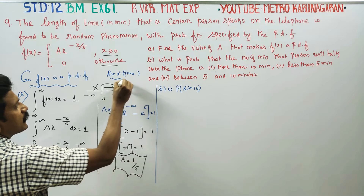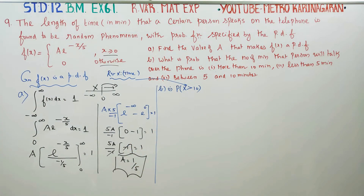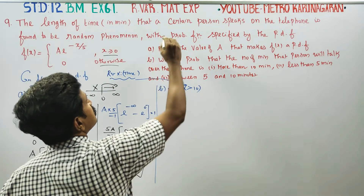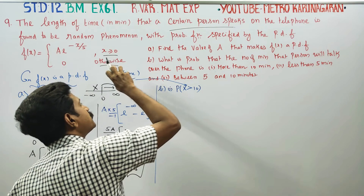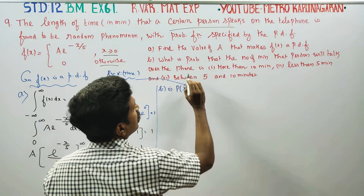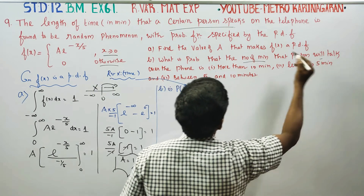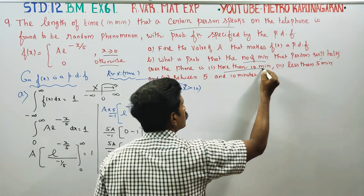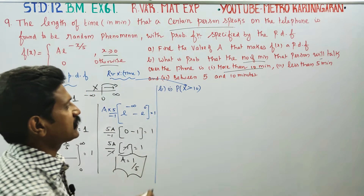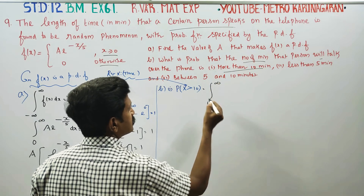Time is the random variable, and we need the probability that time is greater than 10 minutes. The speaking time is the random variable in this problem. The number of minutes that a person will talk is more than 10, so X is greater than 10. Looking at the formula, the integral runs from 10 to infinity: the answer is the integral from 10 to infinity of f(x) dx.